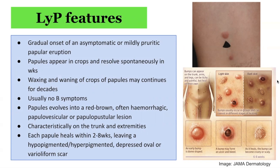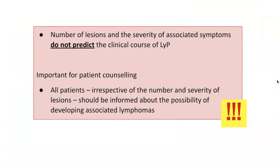Characteristically on examination, the skin lesions may be in different stages of evolution. The papulonodules may leave transient hypopigmented or hyperpigmented macules, and occasionally some superficial atrophic or varioliform scars may be left behind as lesions disappear. In other cases, lesions may disappear without any ulceration or sequelae. The predominant sites of involvement include the trunk and limbs, and the eruption is generally asymptomatic. Importantly, the number of lesions and severity of symptoms do not predict the clinical course of lymphomatoid papulosis.